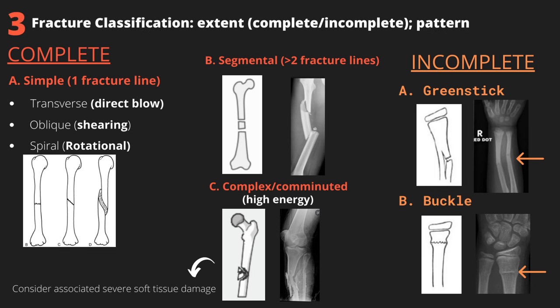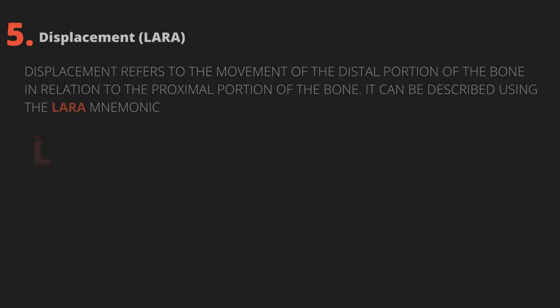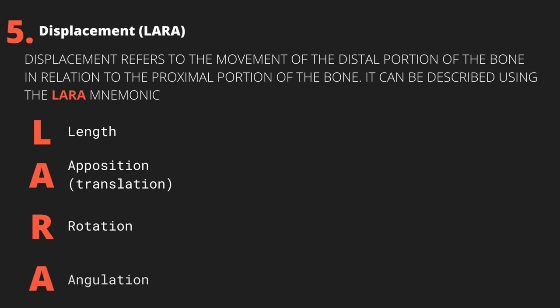Fractures can also be incomplete. Focusing on two common in the pediatric population: greenstick fractures occur when the bone deforms without breaking completely, made possible by the elasticity of children's bones; and buckle fractures occur when the cortex of the bone buckles under a compression load, but there is no loss of continuity or deformity of the bone.